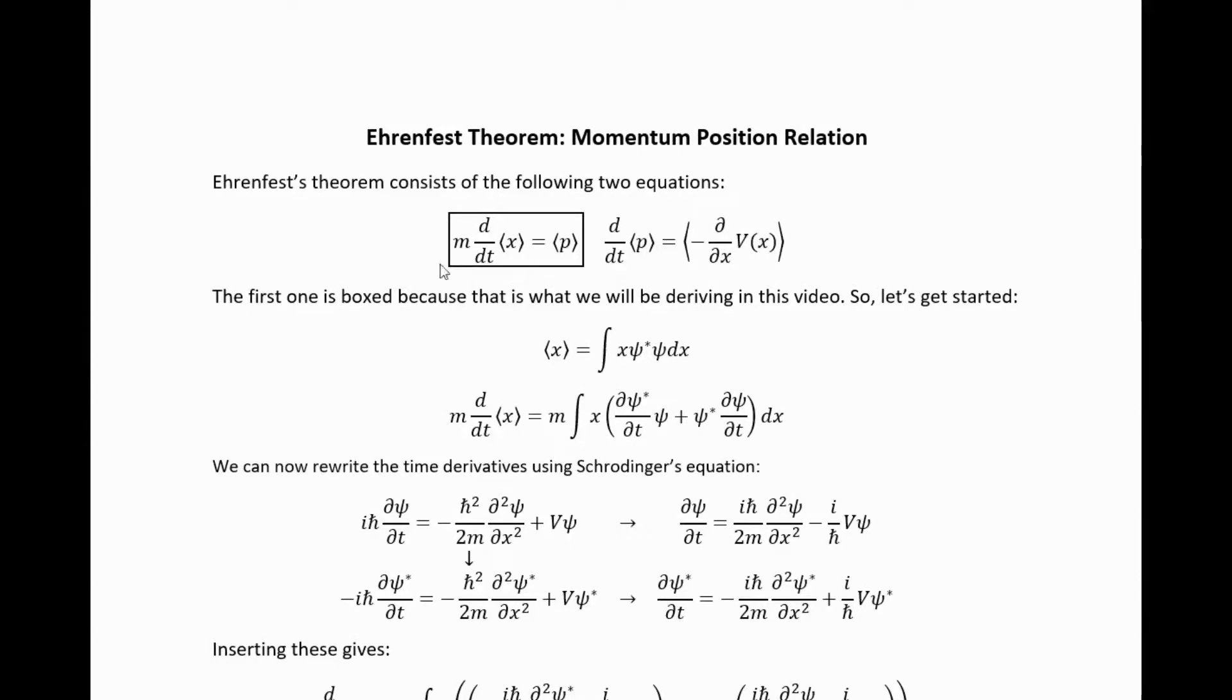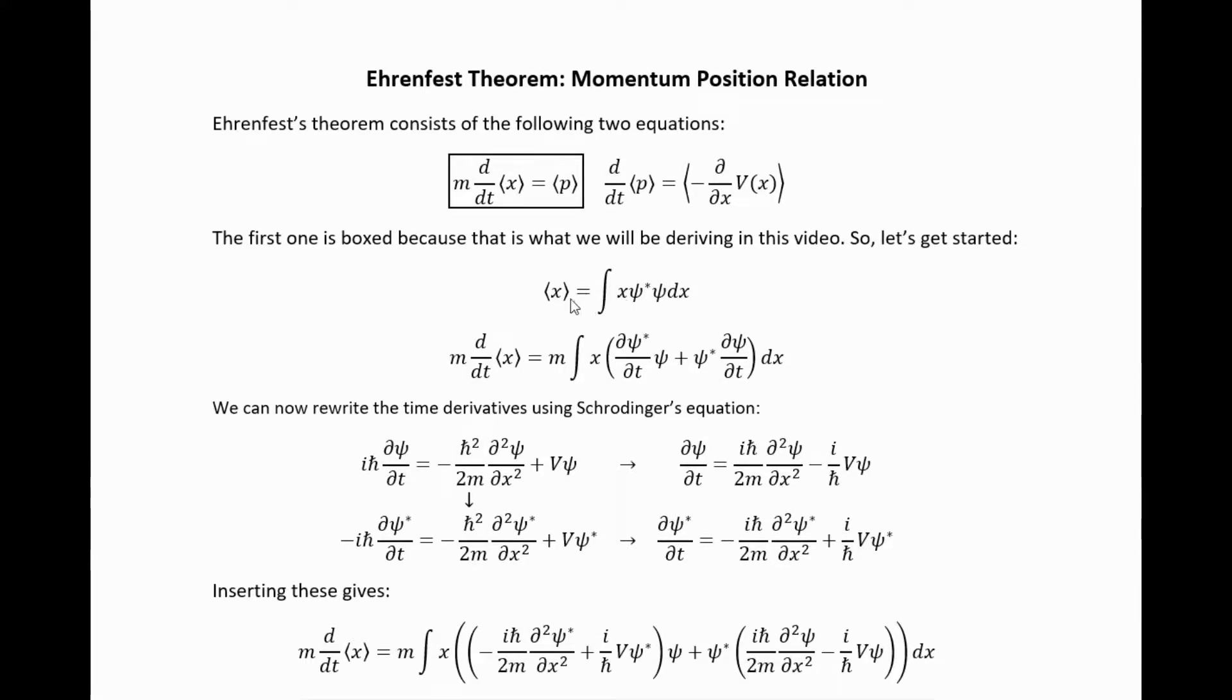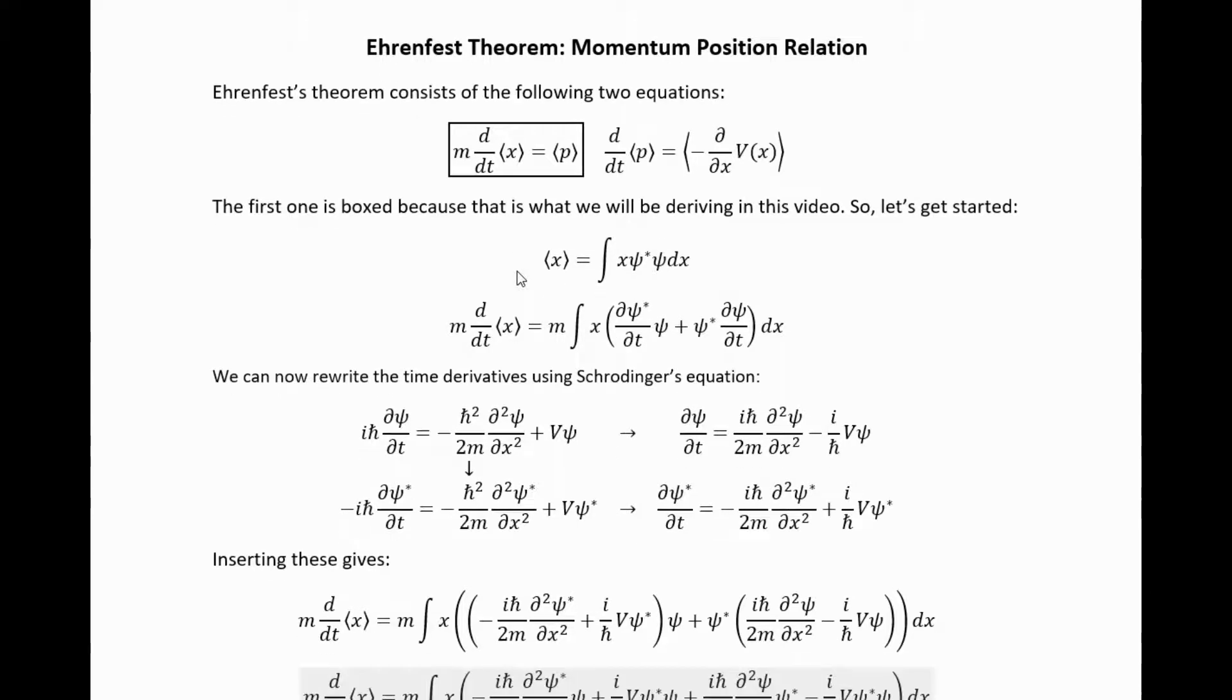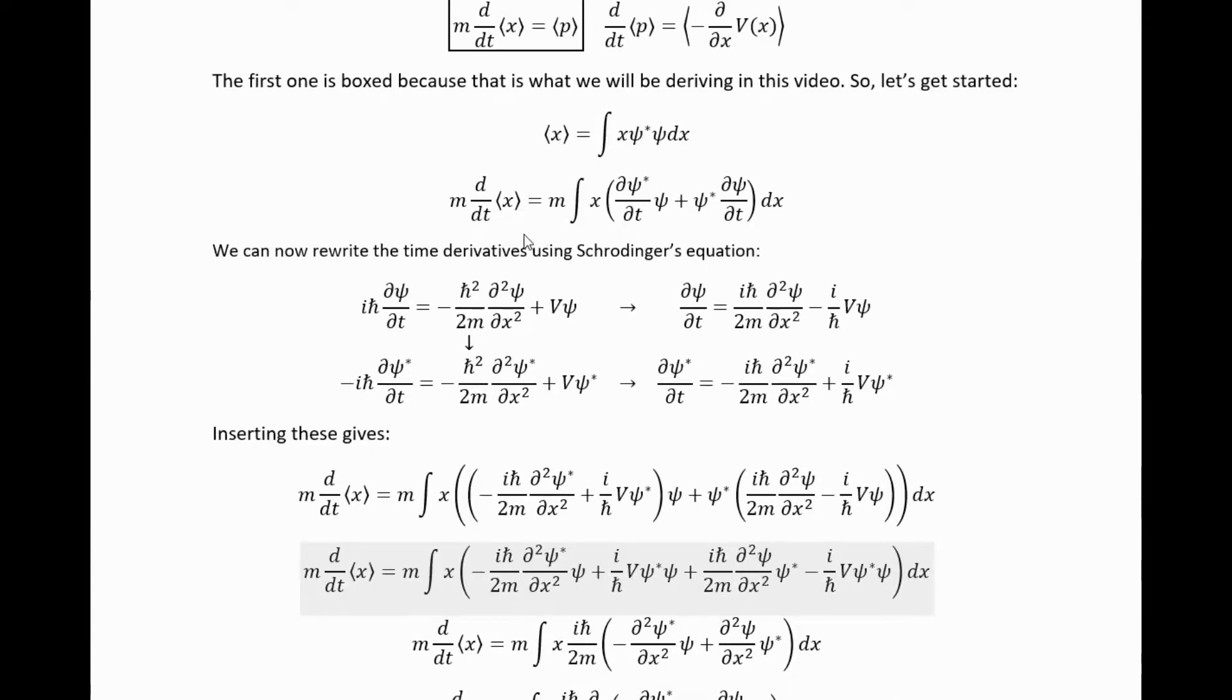Ehrenfest's theorem consists of these two equations. I derived this one in a previous video. This video will be focused on deriving this. We remember that the expectation value of x can be written like that, so the goal is just to take m times the time derivative of it and see what we get. We should be able to reduce it down to the expectation value of the momentum operator.